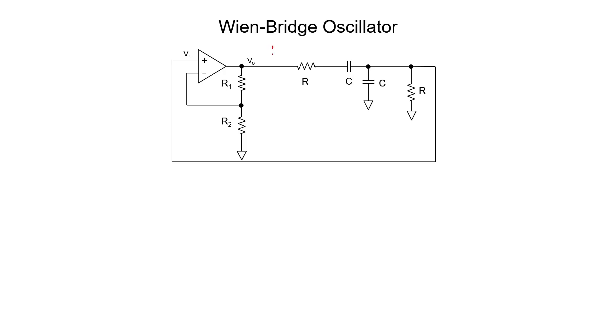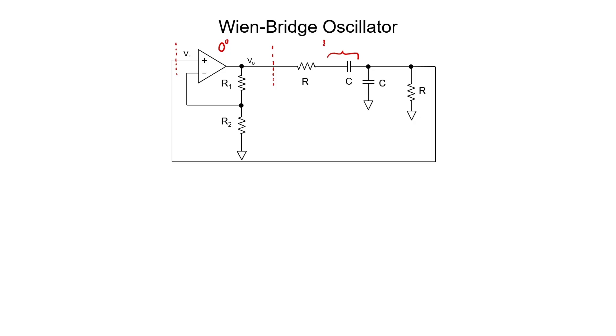Let's now look back at the Wien Bridge oscillator and see what happens to the phase of the signal as it goes around the feedback loop. The Wien Bridge oscillator can be neatly divided into an amplifier portion and a filter portion. This is a non-inverting amplifier, so the phase does not change when the signal passes through it — 0 degrees. When the signal exits the amplifier and passes through the first capacitor, which is in series, it looks like a high-pass filter, shifting the phase in the positive direction between 0 and 90 degrees. The second capacitor is in the shunt configuration and gives a negative phase shift. The Wien Bridge oscillator achieves the required net phase shift of 0 degrees by having one capacitor shift the phase forward and another shift it backwards.